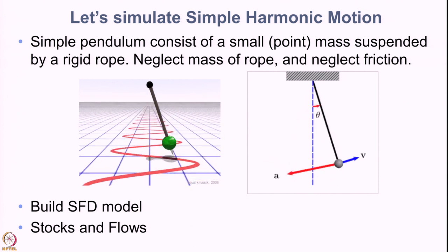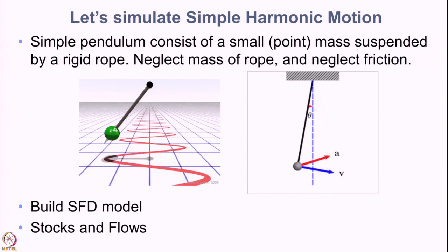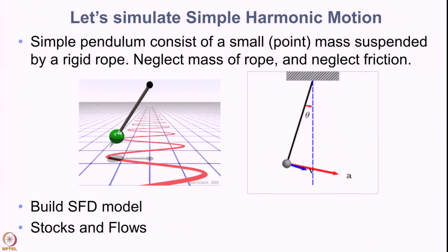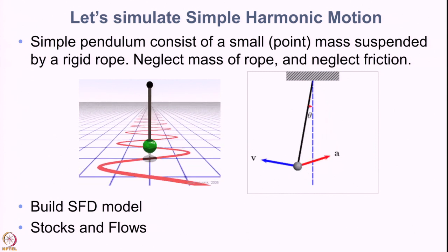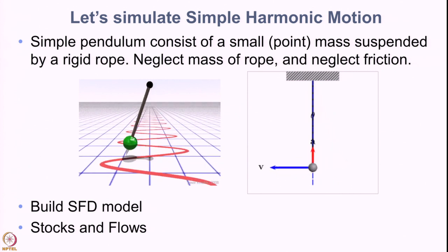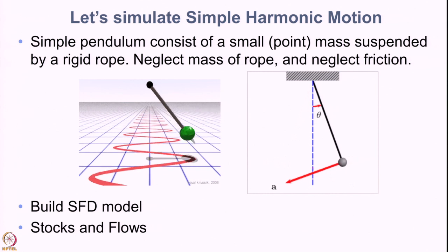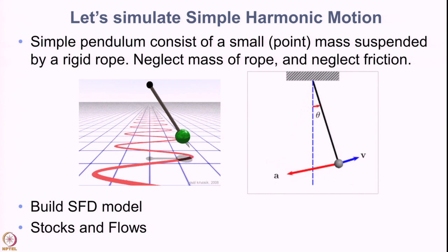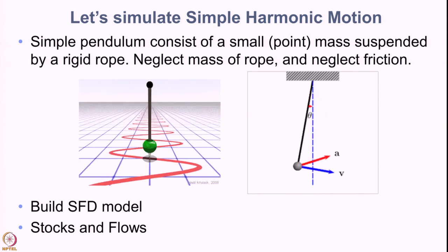Now let us observe what is happening here. When we say a pendulum is moving, what do we mean? If you observe the left-hand figure, it becomes readily apparent. The red line captures the oscillatory behavior. What oscillates is the position of the pendulum.